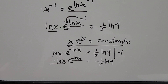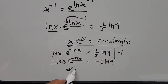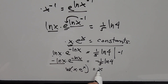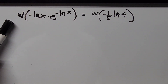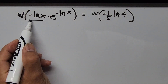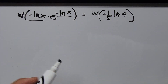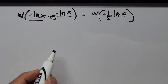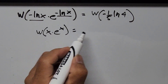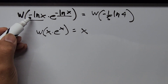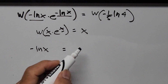Now we can apply the Lambert W function. Recall that W of x times e to the power of x equals x. Applying the Lambert W function to our equation, the x here is in the form of negative ln of x — both the base and the exponent are negative ln of x. So the result gives us negative ln of x equals W of negative one-fifth ln of 4.